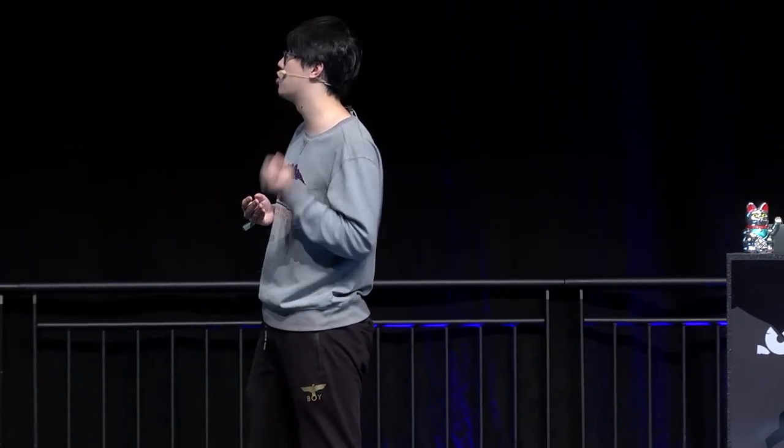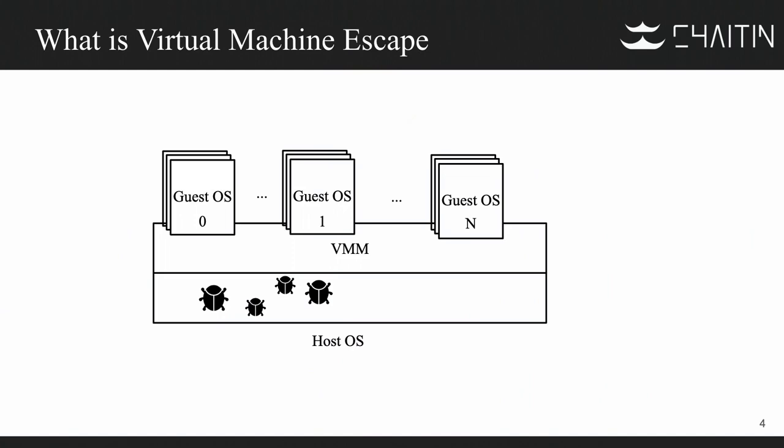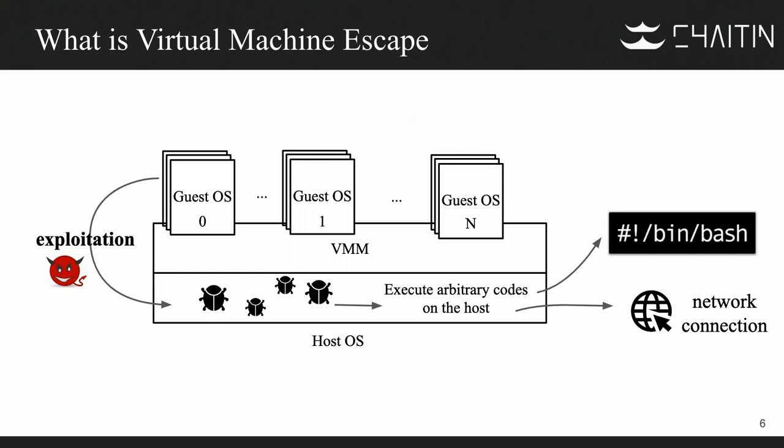What is virtual machine escape? Most of the time, the host system on the hypervisor will emulate the hardware and present resources to the guest. The guest operating system is isolated completely from the host. But if there are bugs in the host or in the hypervisor, it is possible for the guest to escape the virtualized environment, exploiting vulnerabilities and ultimately executing code directly on the host hypervisor. This is what we call virtual machine escape.